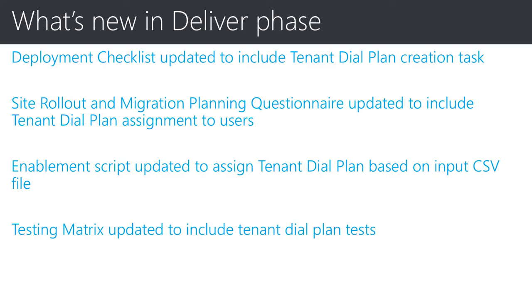Moving on, let's talk about the changes in the deliver phase assets. In this release, deployment checklists, site rollout and migration planning assets, bulk enablement and migration scripts, and testing metrics have been updated to guide the project team in implementing tenant dial plan from deployment and migration to testing. The updates can be considered minor; however, we expect they will help you to be ready to deliver projects that have tenant dial plan as part of the solution. I would recommend downloading the latest SOF assets and seeing for yourself the changes made to incorporate tenant dial plan as part of the SOF journey.